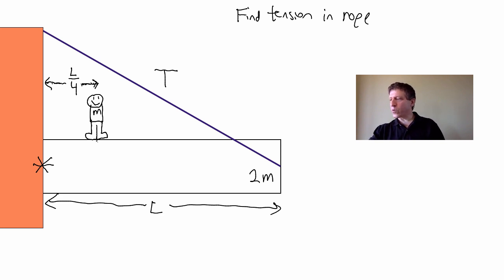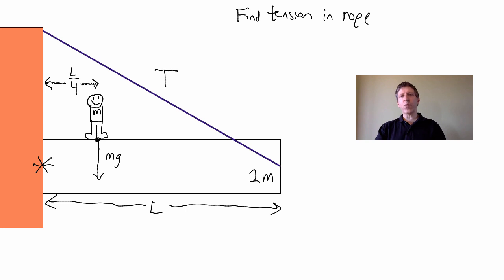We've got this person of mass M. I'm going to apply this force right there — that's the point of application. I'm going to label that MG. It's a person of mass M, so MG is right there where they're standing. It's a force on the sign.